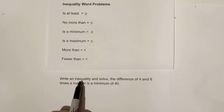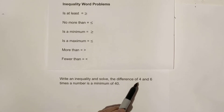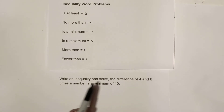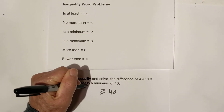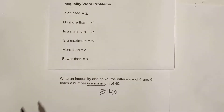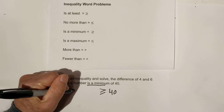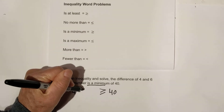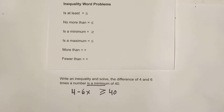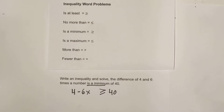Let's write an inequality and solve. The difference of four and six times a number is a minimum of 40. 'A minimum of' is greater than or equal to 40. It's going to be the difference, so: four minus six times a number is greater than or equal to 40.